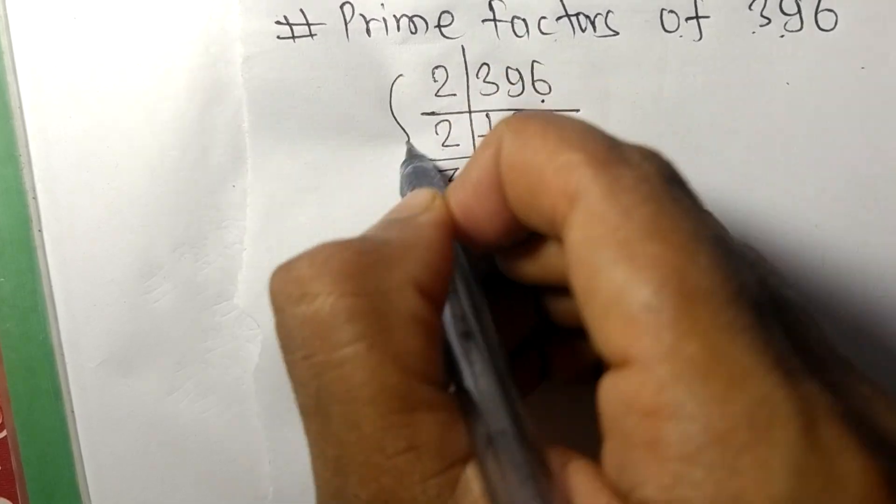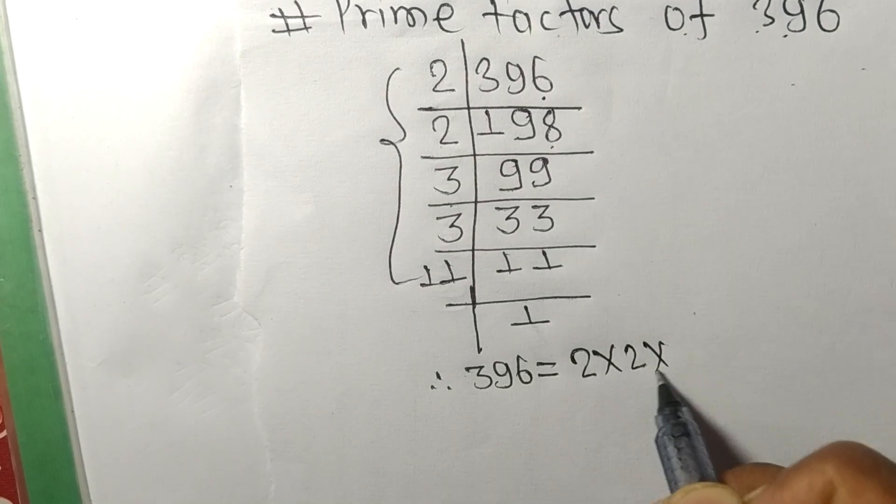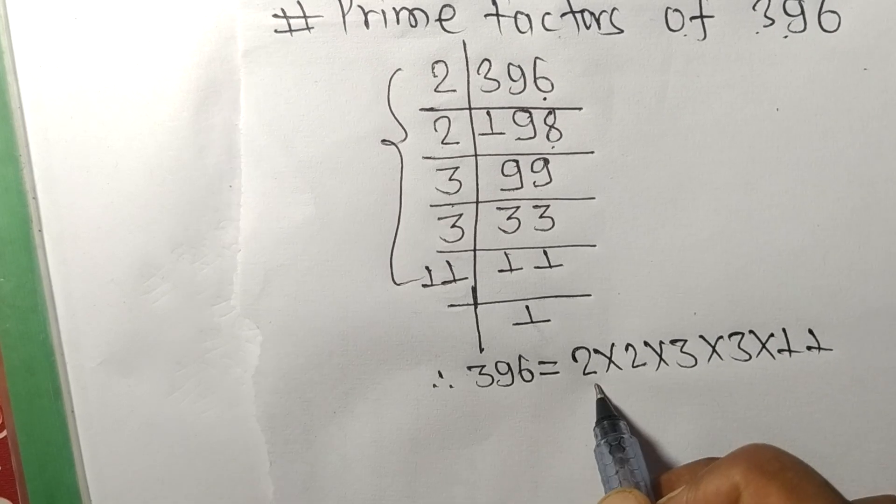equal to, from this side, 2 times 2 times 3 times 3 times 11.